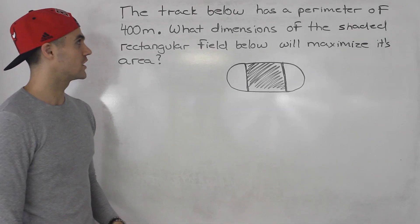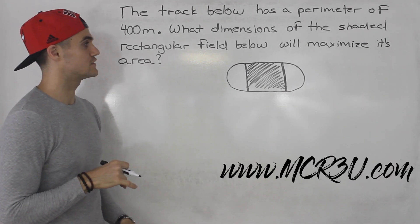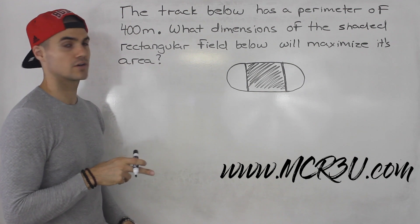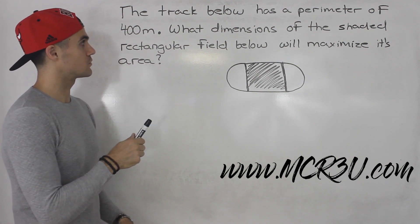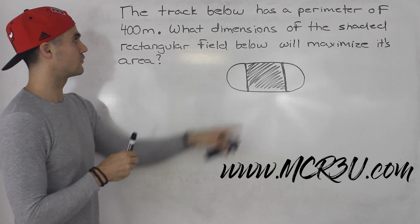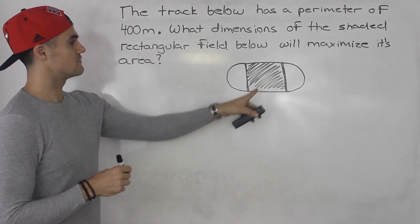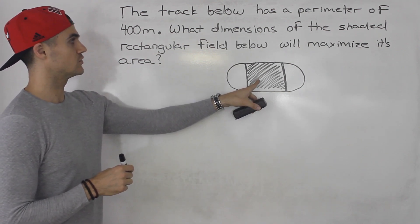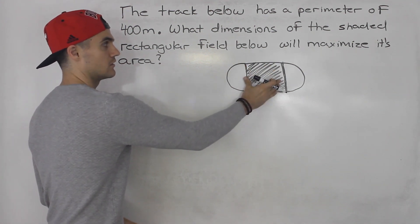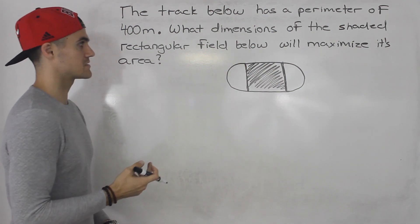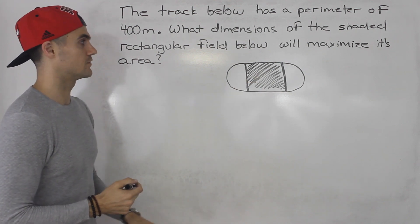Welcome back, guys. Patrick here. Moving on to the next question. This one's going to be fairly difficult, a lot trickier than the ones we did before in this section. So we're told this track here has a perimeter of 400 meters. What dimensions of the shaded rectangular field below, so this field that's in the middle of the track, will maximize the area of the field?